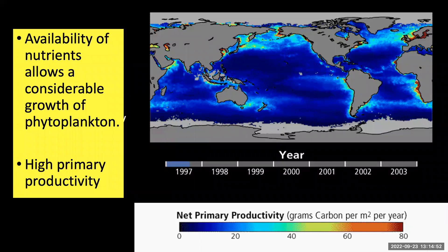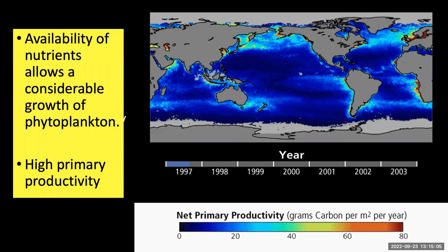These high productivity locations are often blooming with ocean life. The coast of California and the coast of South Africa are examples. If you spend time on the coast here in California, you have probably spotted pods of Pacific white-sided dolphins, gray whales, humpback whales, or perhaps even a blue whale. The abundance of marine mammals along our coast is a function of this high productivity and therefore the availability of nutrients.